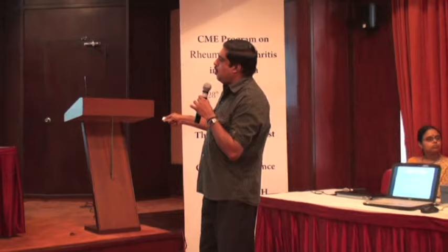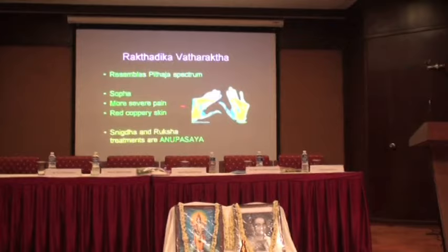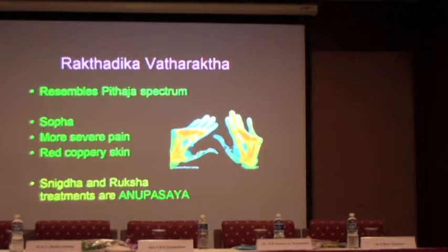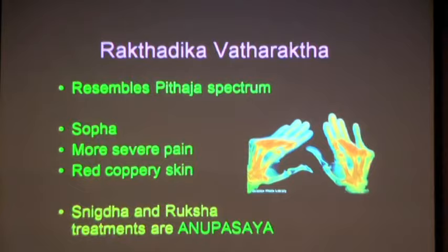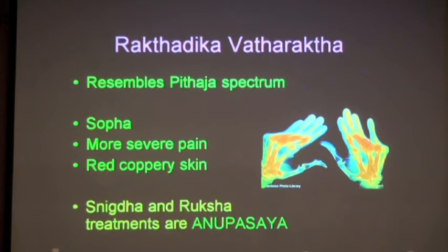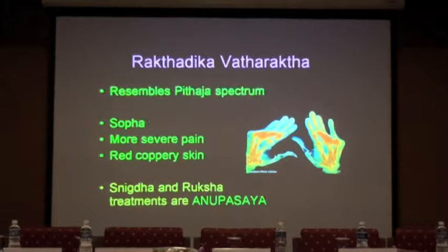Coming to the Raktadhika Vata Rakta — very important in the treatment domain because it resembles the Pittha spectrum. Shopha, more severe pain, red coppery skin — it is clearly mentioned: Raktadhike Rakta Shopha Adhirikta Todas Thamra Chimichimayate. That Thamra Chimichimayate indicates burning pain. Another important point: in Raktadhika Vata Rakta, the patient will never get a response to Snigdha Chikitsa and Ruksha Chikitsa. That is the important diagnostic clue.